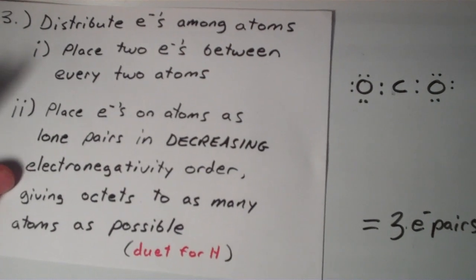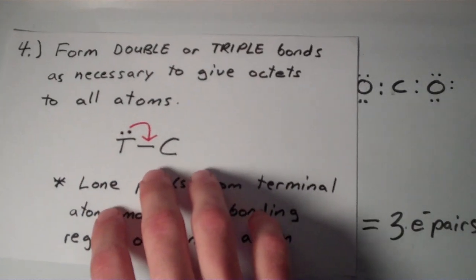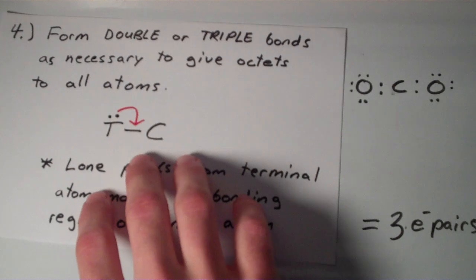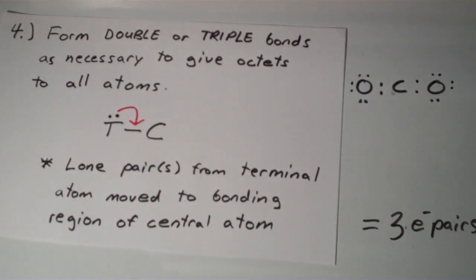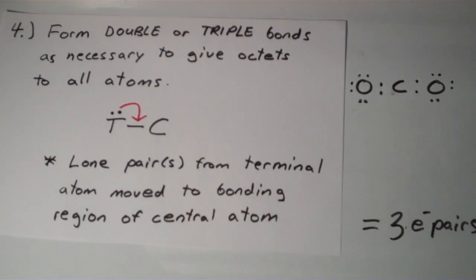Which brings us to the next step. The next step is you want to form double or triple bonds as necessary to give octets to all the atoms. So the way that we do this is we move the lone electron pairs from terminal atoms. We move one or more, one or two lone pairs from a terminal atom into the bonding region between the terminal atom and the central atom.